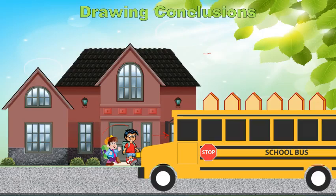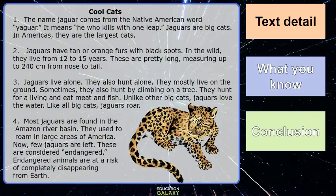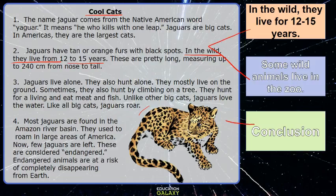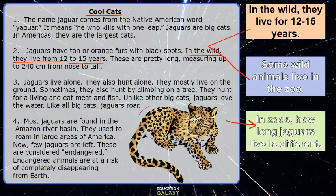Let's apply this to a text. The text detail from paragraph two says that in the wild, jaguars live for 12 to 15 years. This is from a passage about cool cats, and we see a baby cool cat in the picture — how cute is that! Now, what do you already know? You have seen some wild animals that live in the zoo. Let's put these two things together to draw a conclusion.